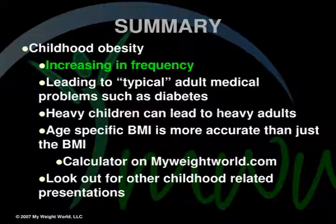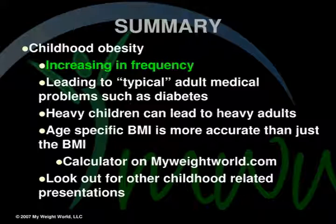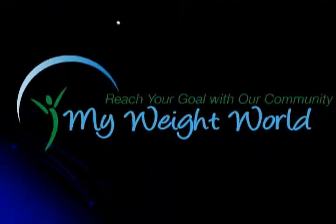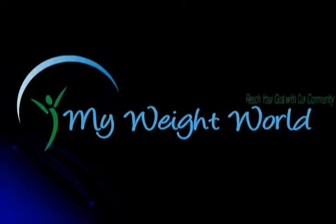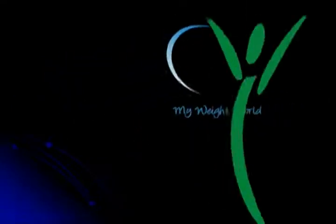Summary: Childhood obesity is increasing in frequency, leading to typical adult medical problems such as diabetes. Heavy children tend to become heavy adults. Age-specific BMI is more accurate than the standard BMI number, and you can find the calculator for this on myweightworld.com. Look for other childhood-related presentations on myweightworld.com. This has been another presentation by My Weight World.